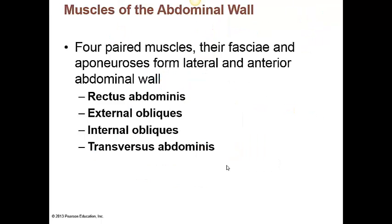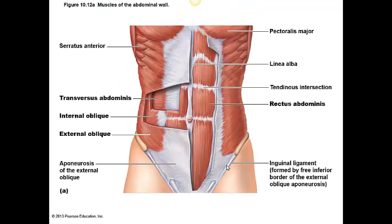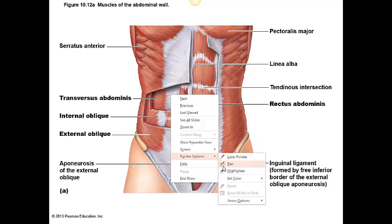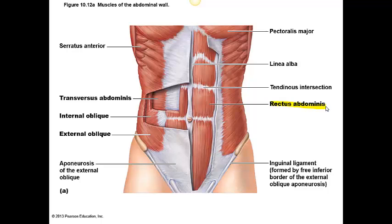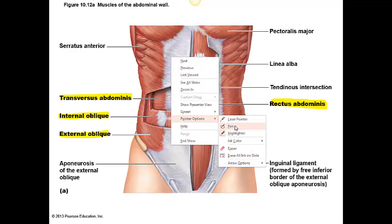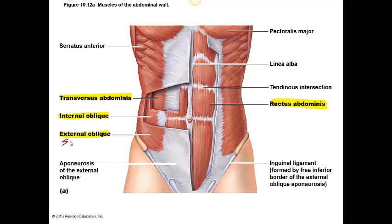Our next slide shows the muscles of the abdominal wall. We have the rectus abdominis — the one that can look like a six-pack — the transversus abdominis, the internal oblique, and the external oblique. Just like the external and internal intercostals, these muscles are named by which is more superficial and which is deeper: the external obliques are more superficial and the internal obliques are deeper. The directions of the fascicles are in opposite directions, and the transversus abdominis is perpendicular to the rectus abdominis — the word rectus meaning the fascicles run in a straight line.